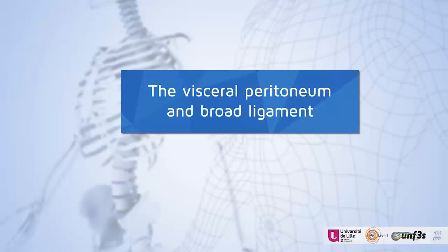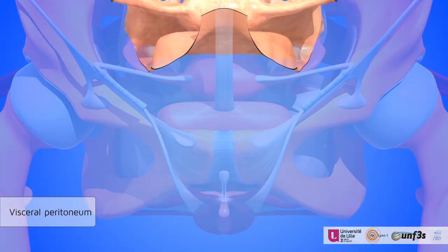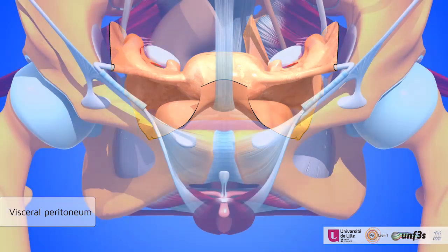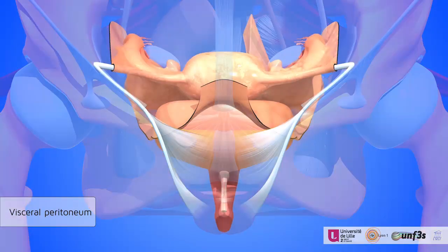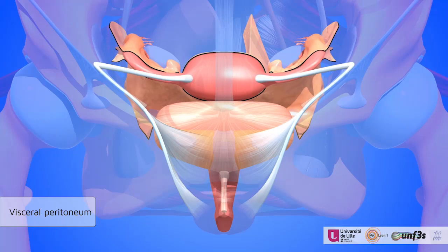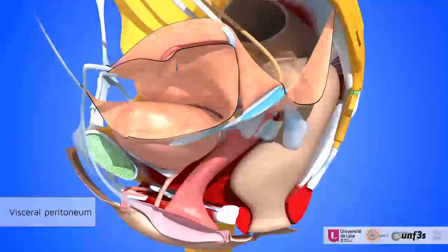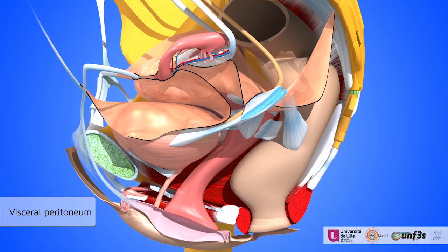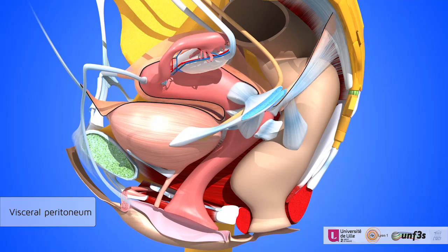Visceral peritoneum ligaments link all these different pelvic organs from the pelvic walls to the bladder, uterus, and rectum. On this lateral view, it is described to have an anterior and a posterior cul-de-sac.